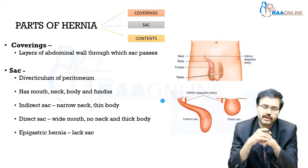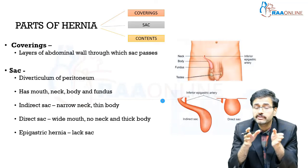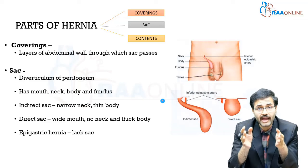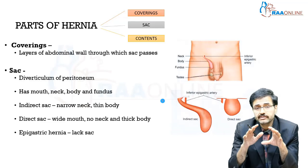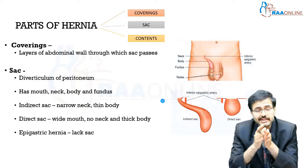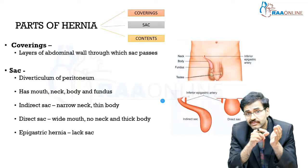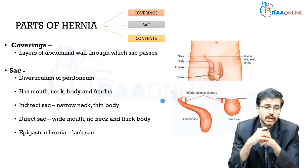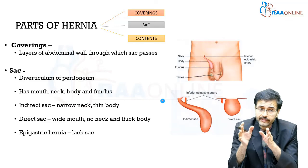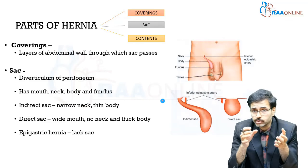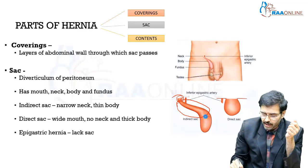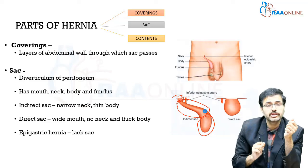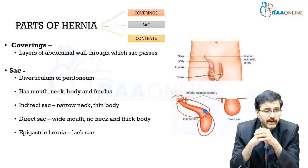What are the parts of a hernia? A hernia has three parts: it has coverings, it has a sac, and it has contents. The coverings of a hernia are basically the layers of the abdominal wall through which the sac passes. The sac itself has three parts: a mouth, a body, and a fundus.